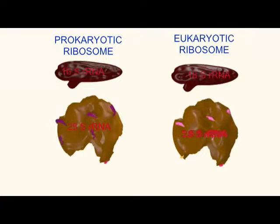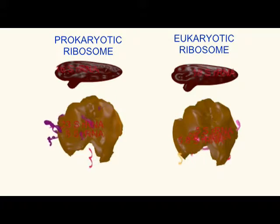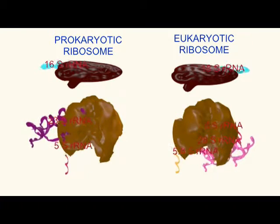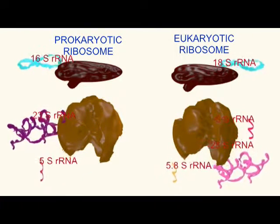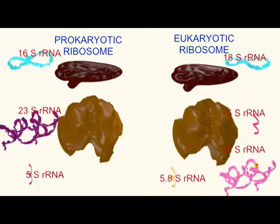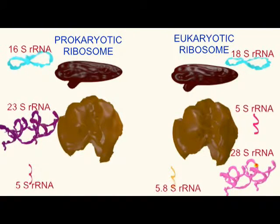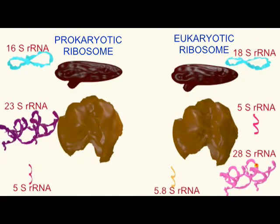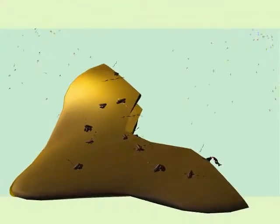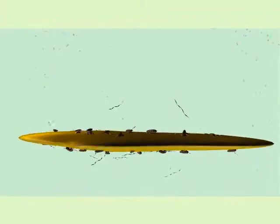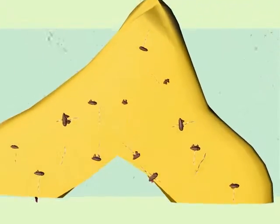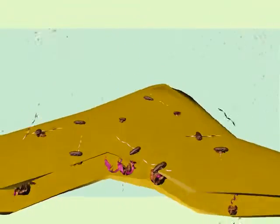Both prokaryotic and eukaryotic ribosomes are composed of a large subunit and a small subunit. In prokaryotes, the small subunit is composed of a 16S piece of rRNA, and the large subunit is composed of 23S and 5S pieces of RNA, where the S stands for Svedberg units, which measures their density.